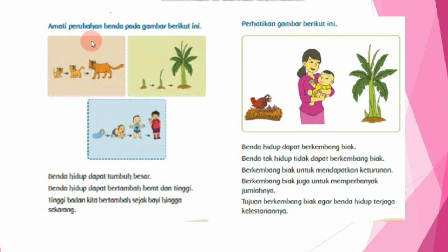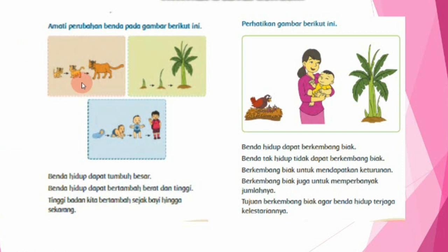Amati perubahan benda pada gambar berikut ini. Benda hidup dapat tumbuh besar, dapat bertambah berat dan tinggi. Tinggi badan kita bertambah sejak bayi hingga sekarang. Perhatikan gambar yang pertama, yaitu gambar hewan kucing. Kucing dapat tumbuh mulai dari kecil, kemudian sedang, dan tumbuh menjadi besar. Begitu pula dengan tumbuh-tumbuhan.